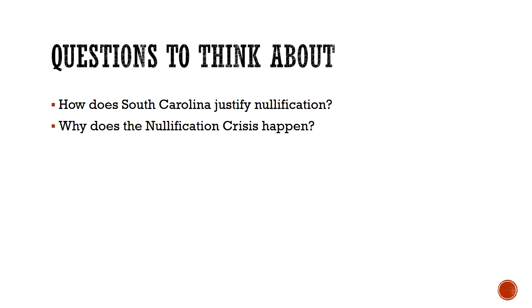When we take a look at the first part of Jacksonian America, I want to focus on the nullification crisis. Your questions to think about: How does South Carolina justify nullification? This goes along with your journal, so I'll give you some insight into this. And second, why does the nullification crisis happen?